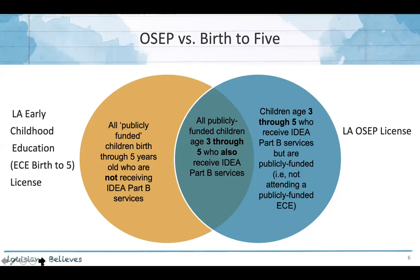So essentially in the early childhood license, you have all of your publicly funded children ages birth through five years old that are not receiving IDEA Part B services. And then in the OSEP license, you have all of the children who do receive those services and are not publicly funded. There's also an overlap where there are publicly funded children that also receive IDEA Part B services. Just want to be clear that when we're talking about exit, we want to make sure that we are only looking at exiting children in the OSEP license. You won't need to take any additional steps in the ECE license for those children that do have duplicate accounts.